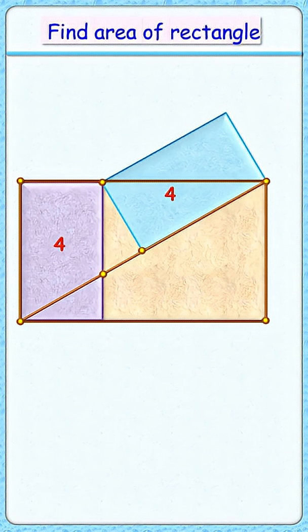This beautiful question: can you find the area of this brown rectangle? We are given that these purple and blue rectangles are congruent with area 4 centimeters square each. Let's check the solution.